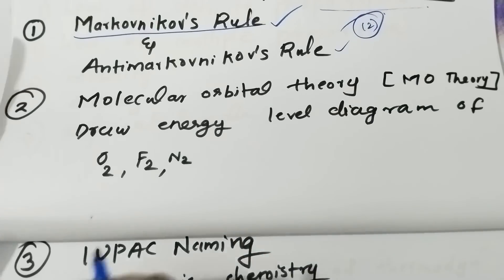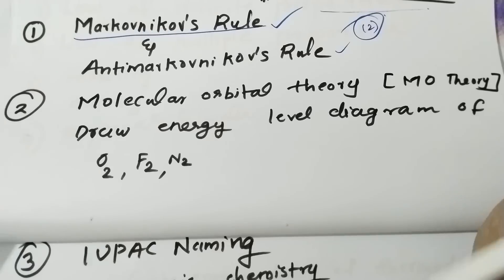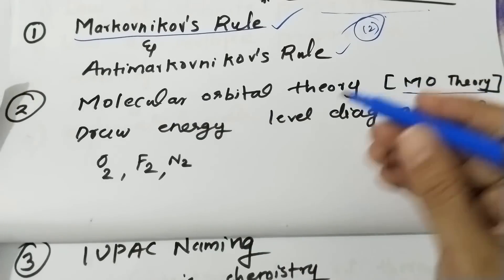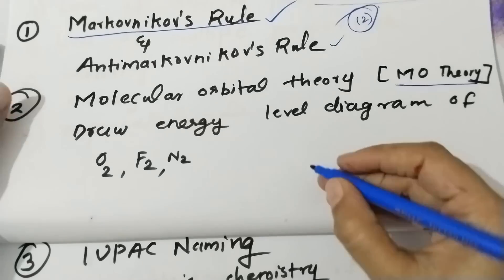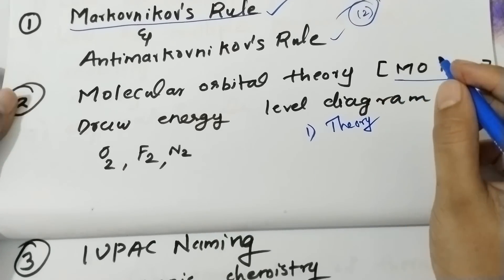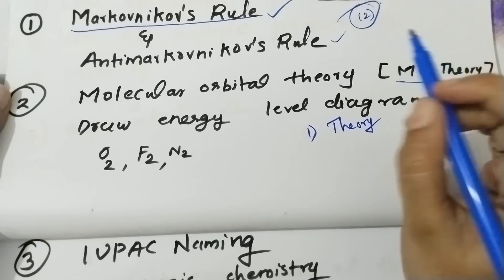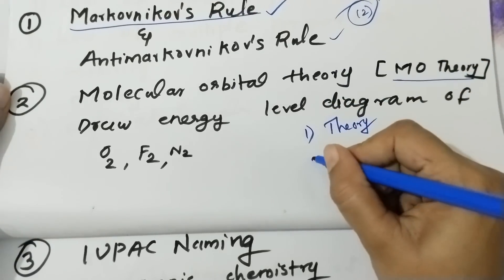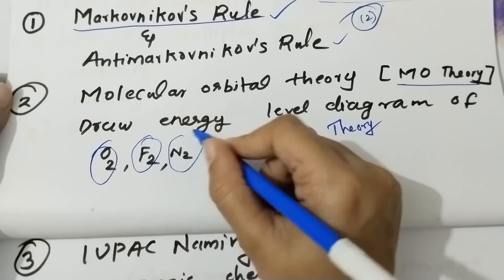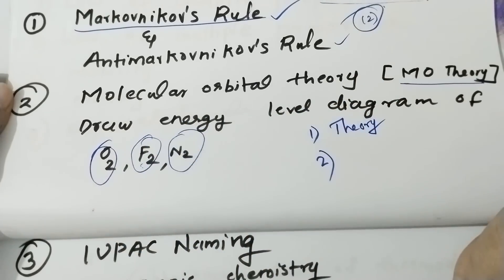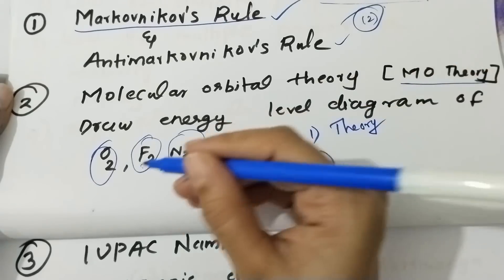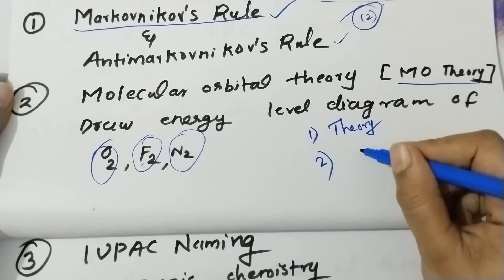The first question is Molecular Orbital Theory — MO Theory. Write two postulates of Molecular Orbital Theory. Draw the energy level diagram of O2 and F2. The energy level diagram covers O2 and F2, carrying three marks.